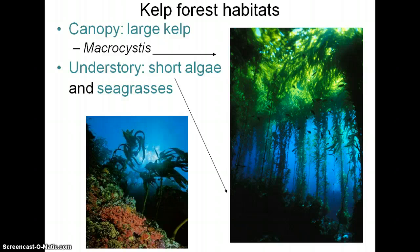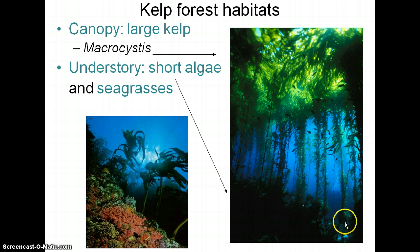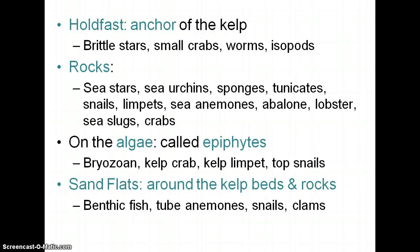Kelp will form different habitats in a kelp forest — just like the rainforest has a canopy and an understory. At the top, the algae grows up and once it reaches the surface it keeps growing along the surface and floats on top, creating the canopy. Lots of different things will live up there. Here at the bottom is the understory. In the understory you can have short algae on a rocky shore, or if you've got rocks with sandy areas around them, you'll have seagrass surrounding that — so you get both canopy and understory.